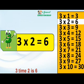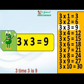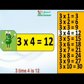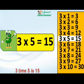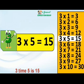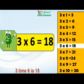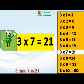Table of 3. 3 times 1 is 3. 3 times 2 is 6. 3 times 3 is 9. 3 times 4 is 12. 3 times 5 is 15. 3 times 6 is 18.